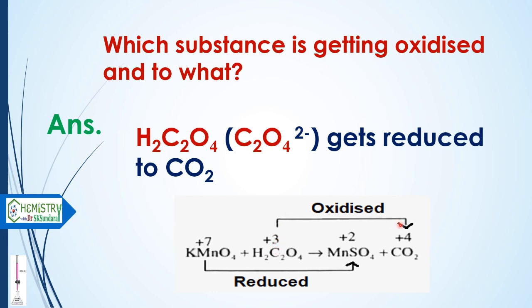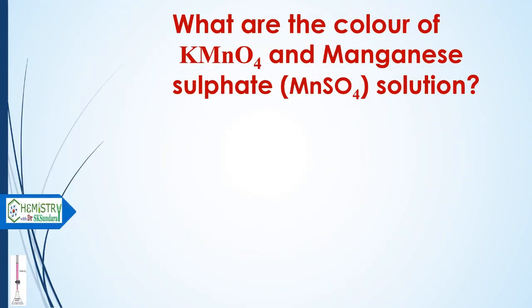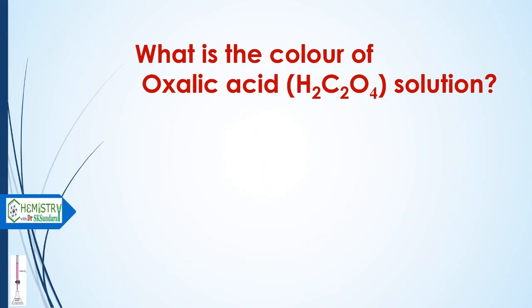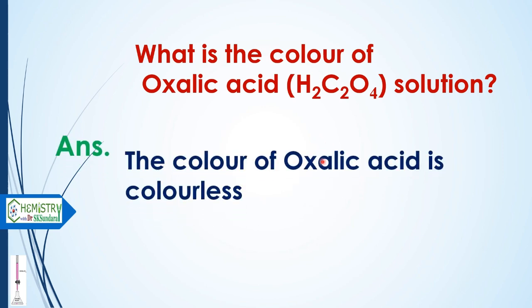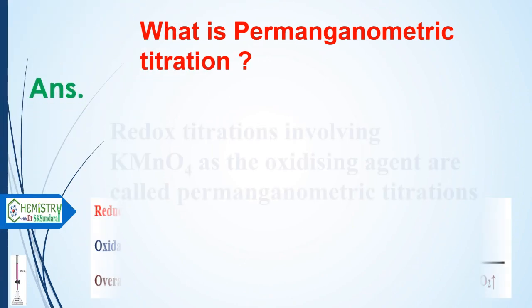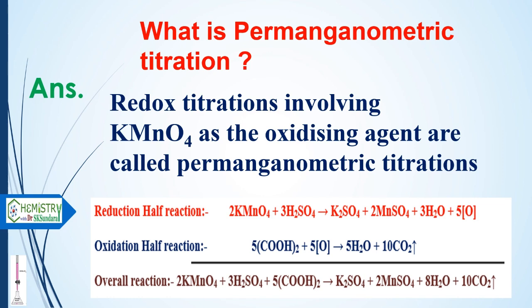The next question is: what are the colors of potassium permanganate and manganese sulfate solutions? The color of potassium permanganate solution is purple when concentrated and light pink when dilute. The color of manganese sulfate solution is colorless. The color of oxalic acid solution is also colorless.